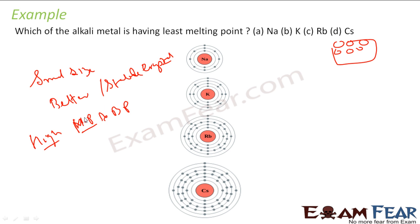Better crystals means or stable crystal means high melting and boiling point. That means small size, high melting and boiling point. Least melting and boiling point, that means large size. The one which has large size is cesium. So cesium has the least melting and boiling point.